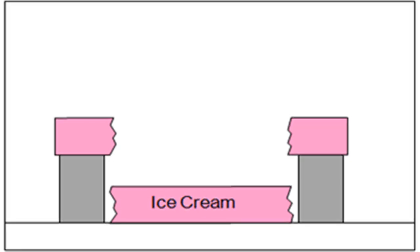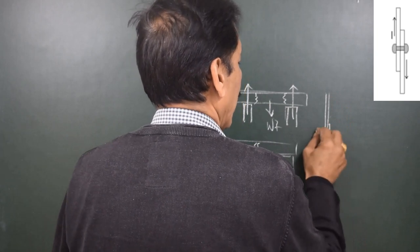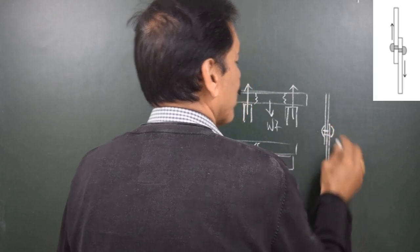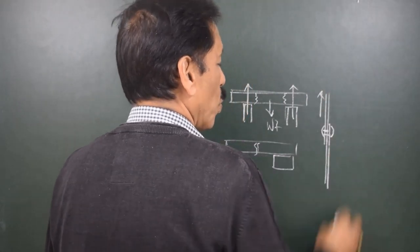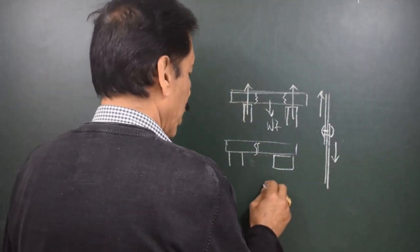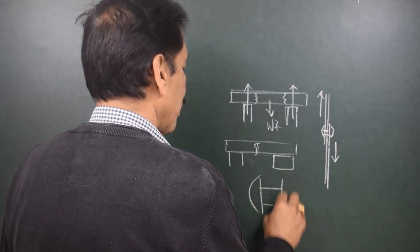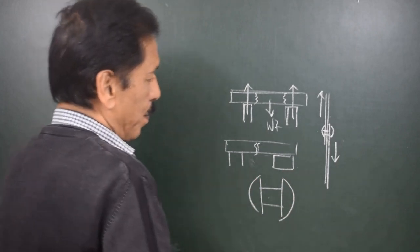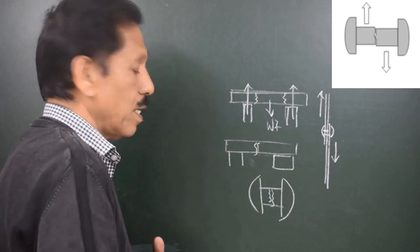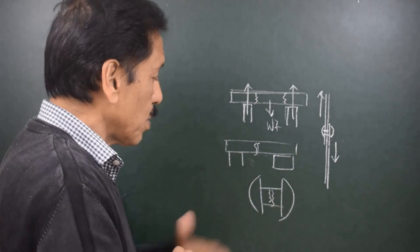In olden times, we had riveted ship construction whereby a rivet holds the plates together. Under stress, one plate wants to go in the upward direction, another plate wants to go in the downward direction, and if we look at the rivet, there is a tendency that the rivet will shear along a plane perpendicular to the axis of the rivet.